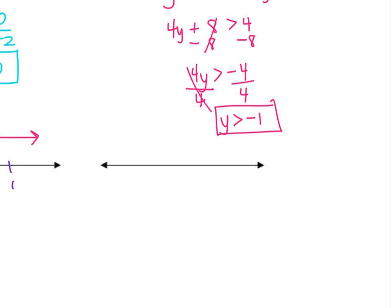On our number line, put negative 1 in the middle, but show me the numbers on both sides, 0 and negative 2. This is going to be an open circle. Shading to the right, because to the right are all the numbers that are greater than negative 1.